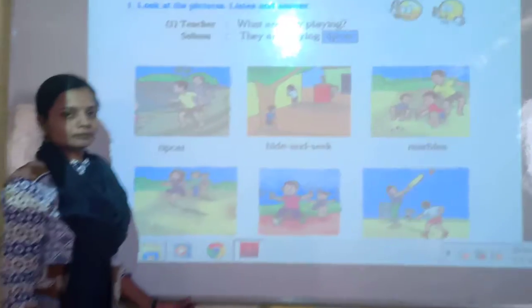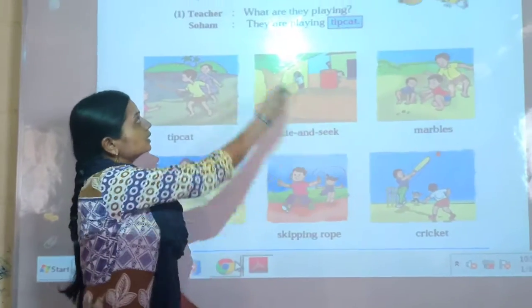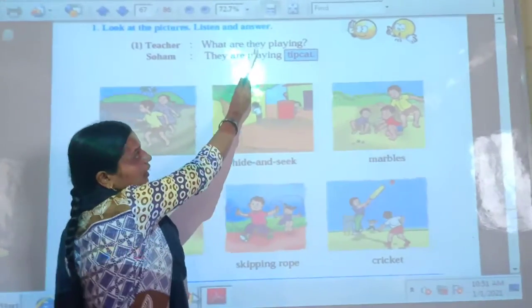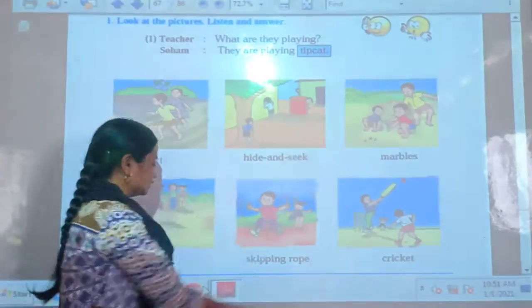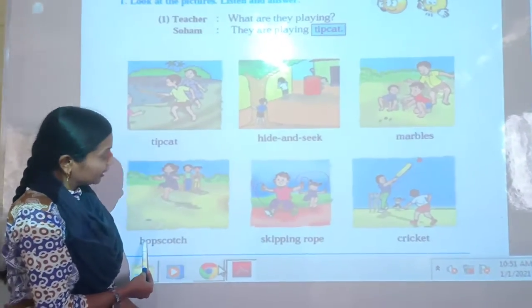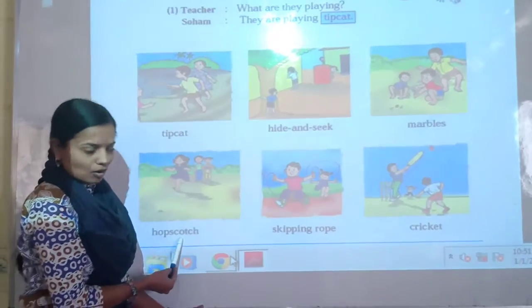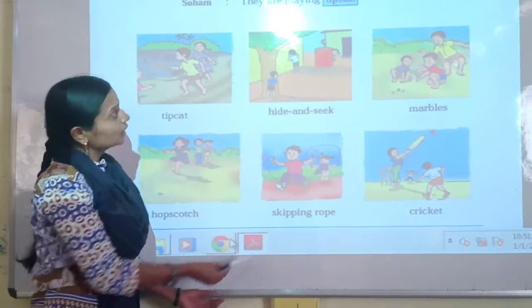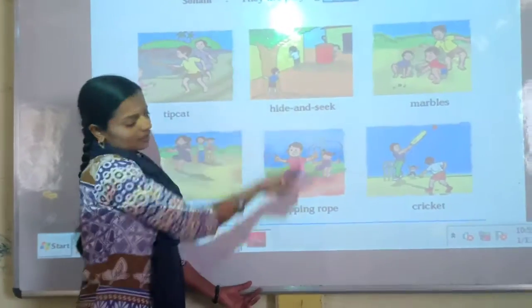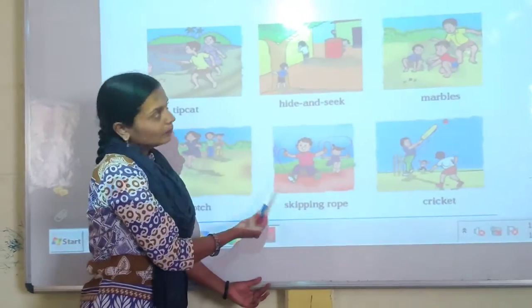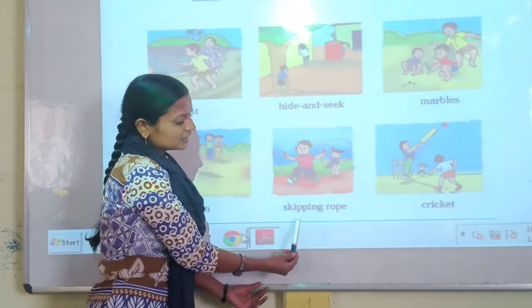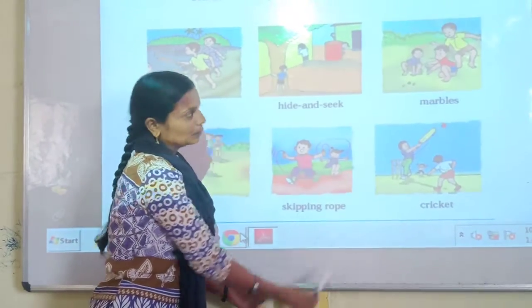Next, teacher says: What are they playing? Soham says: They are playing hopscotch. Next, teacher says: What are they playing? Soham says: They are playing skipping rope.